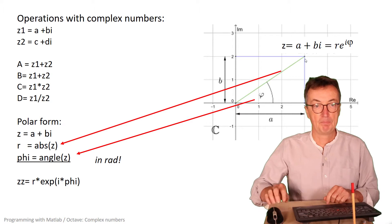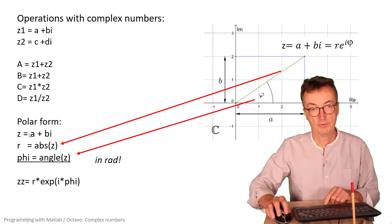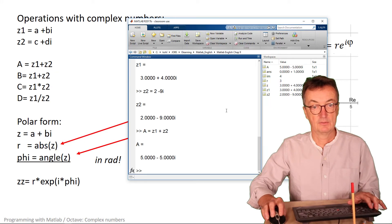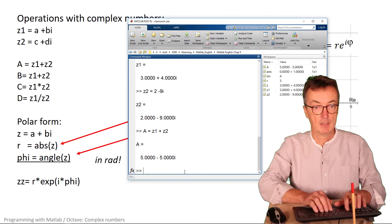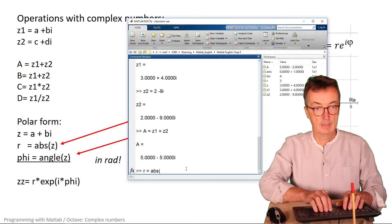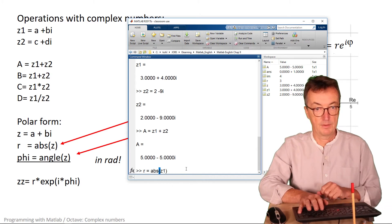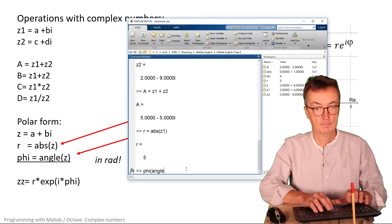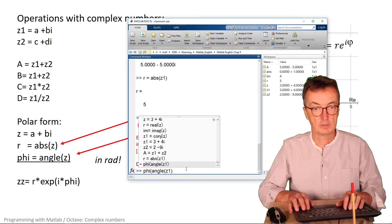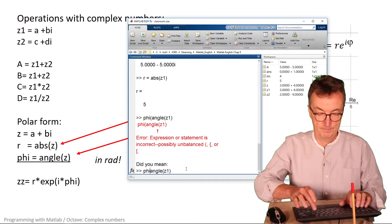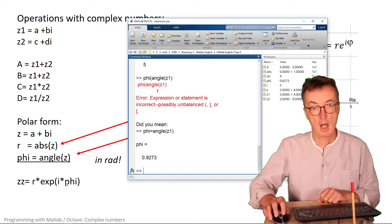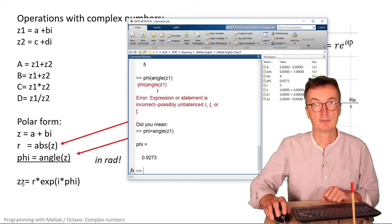The other representation of a complex number is the polar form, where you define the vector by its length — the absolute value — and the angle. MATLAB can do this: for instance, you can calculate the length of z, which in this case is 5, or the angle of z. You can easily rewrite from r and the angle to get the complex number in the other representation.